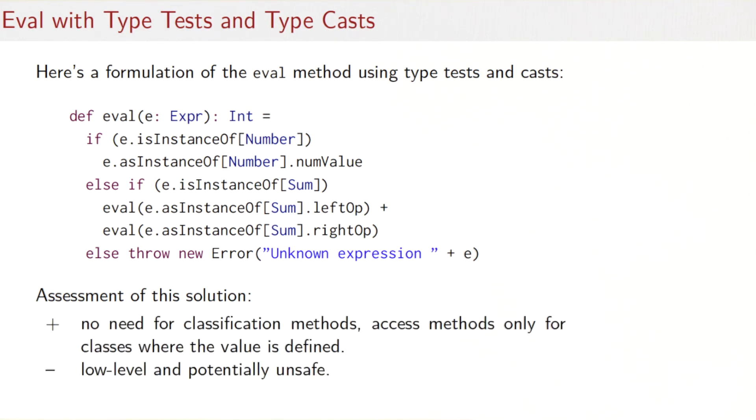So if we look at the solution, then the good part of it is that we don't need any classification methods. These instanceOf tests fulfill that role now. And we need access methods only for classes where the value is defined. So that means that our base trait Expr could actually be empty, whereas Number needs a numValue, and Sum needs a leftOp and a rightOp. But Number doesn't need a leftOp and a rightOp, because we will call leftOp and rightOp only after casting to sum. So we need many fewer methods, which is good.